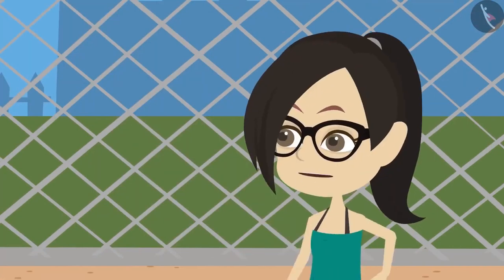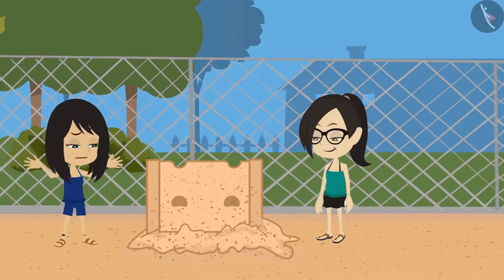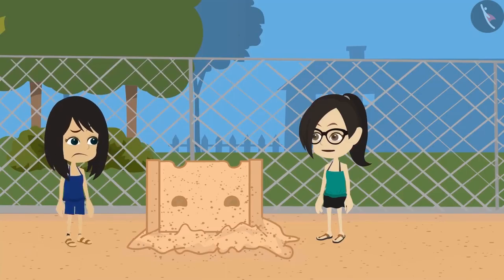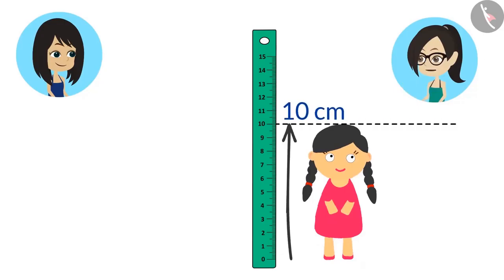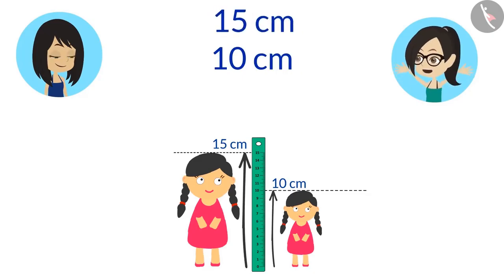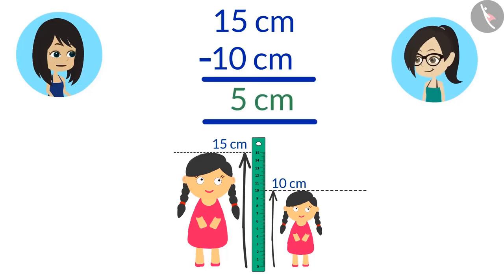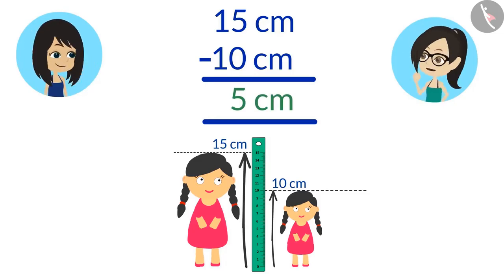What? My doll is taller than your doll. Yes, but how much taller is your doll than my doll? That's easy to find. Your doll is 10 centimeters tall and my doll is 15 centimeters tall. If we subtract 10 from 15, we get 5. That means your doll is 5 centimeters shorter than my doll, and we can also say that my doll is 5 centimeters taller than your doll.